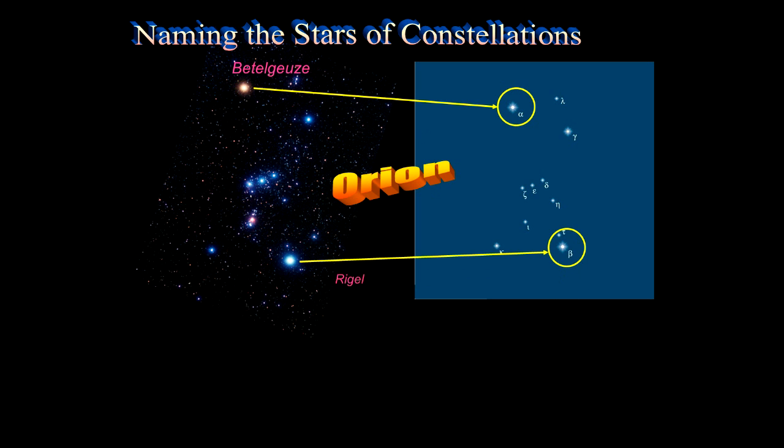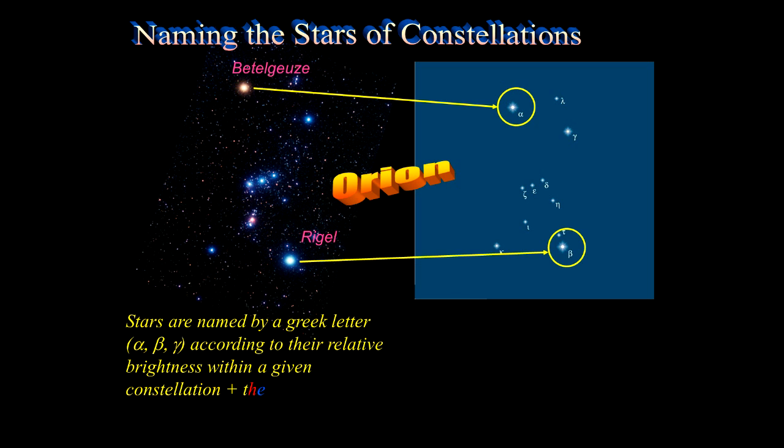And we also have Rigel, which is the beta star. You might recognize alpha and beta as being part of the Greek alphabet. So they were named by a Greek letter, according to the relative brightness, the brightest one in general being alpha, kind of like the alpha male. So within a constellation, you have these designations...